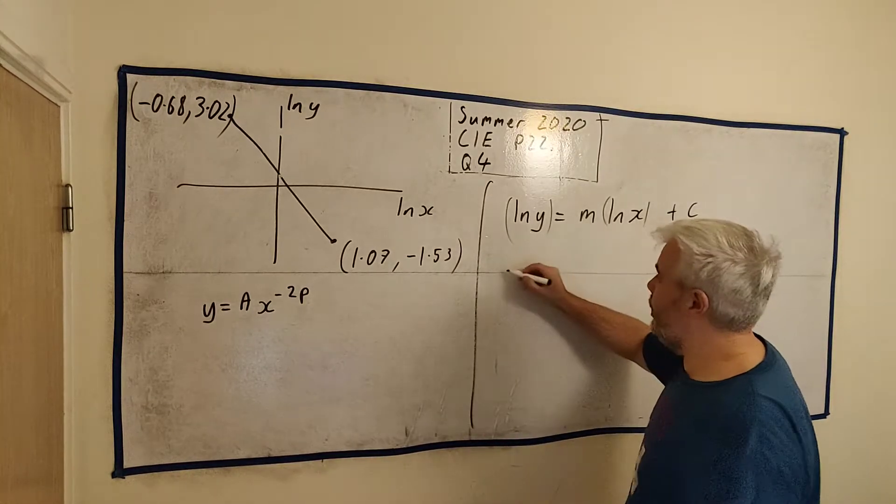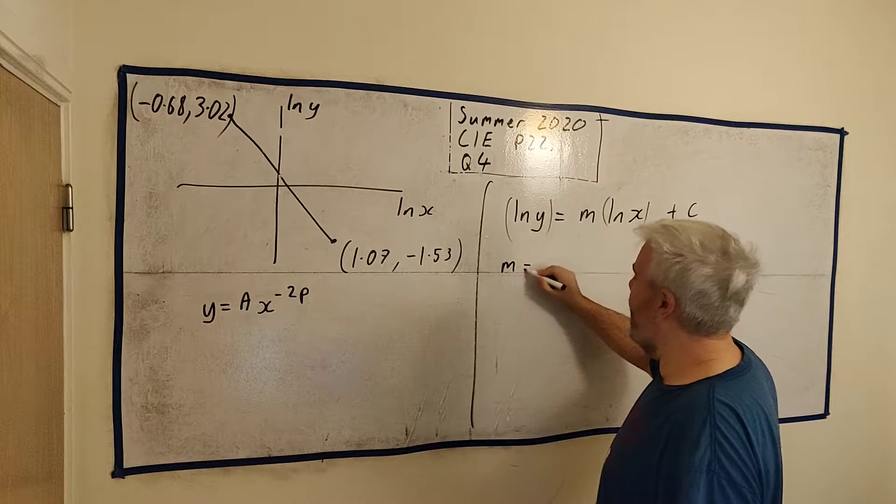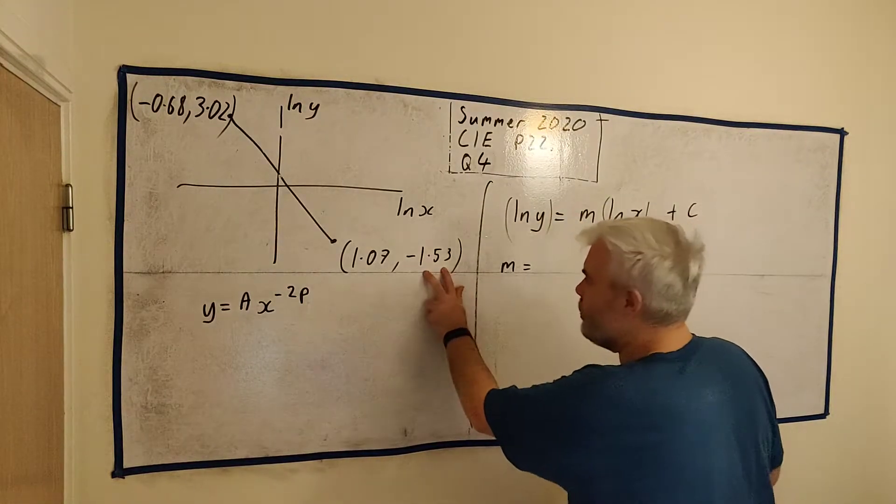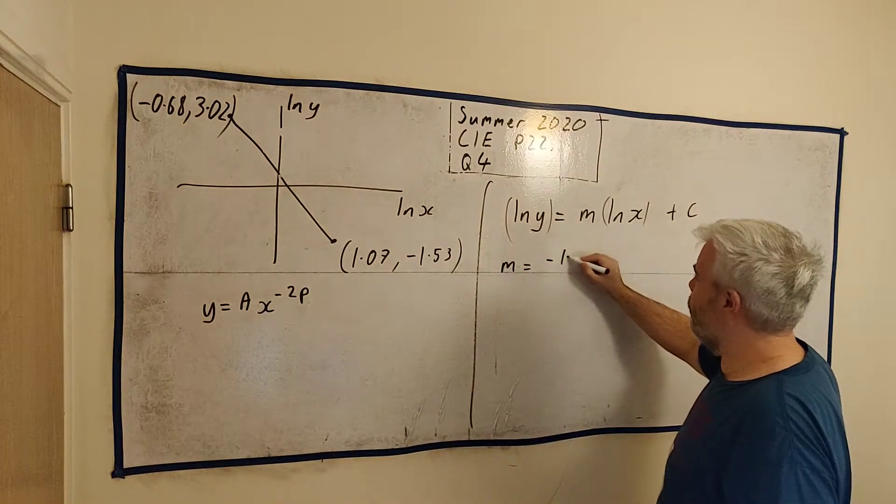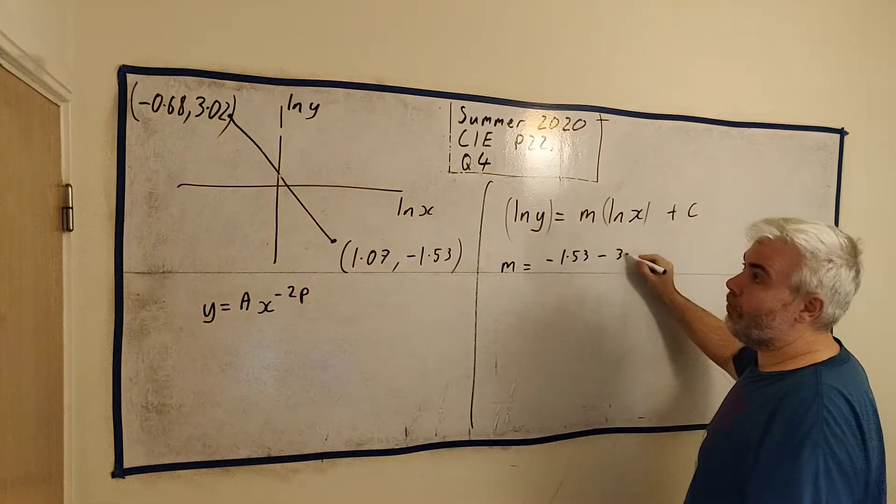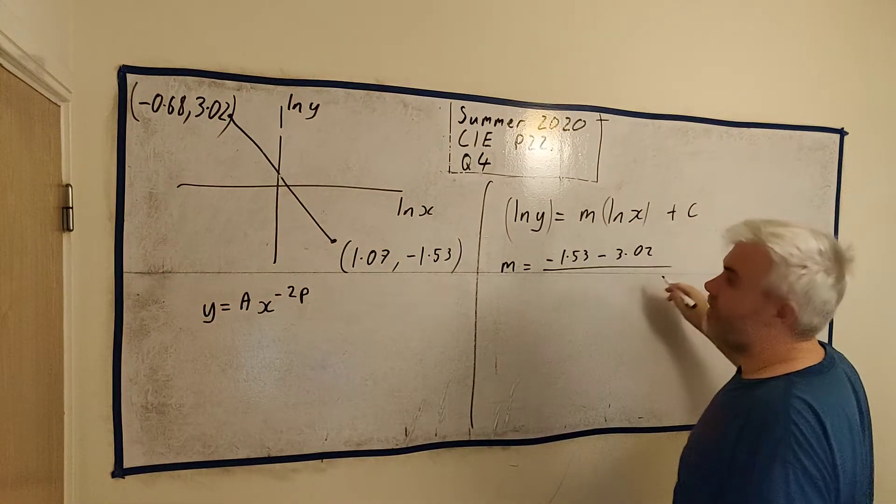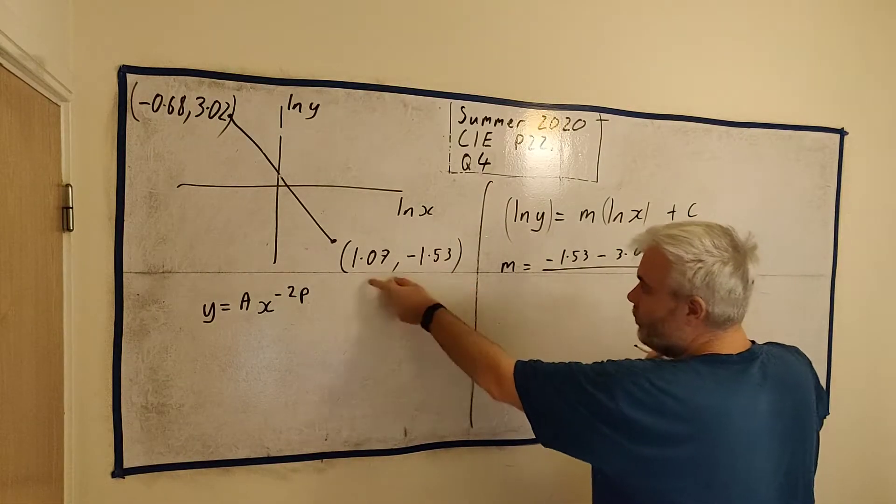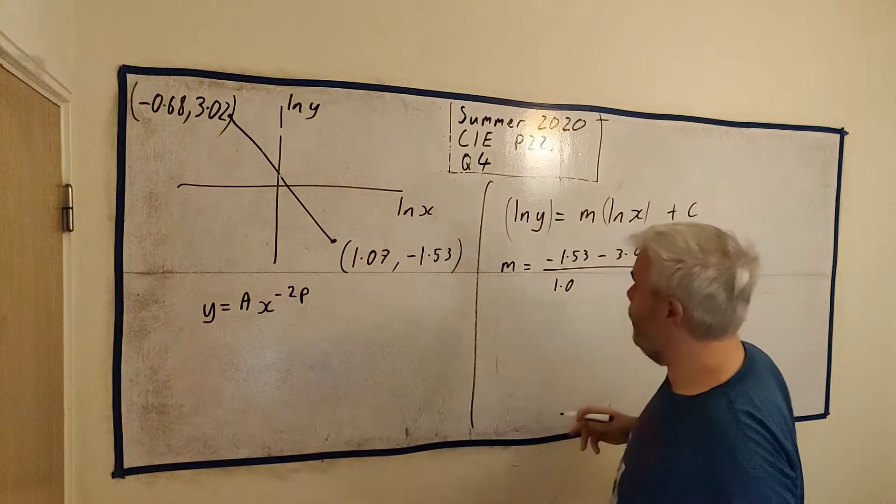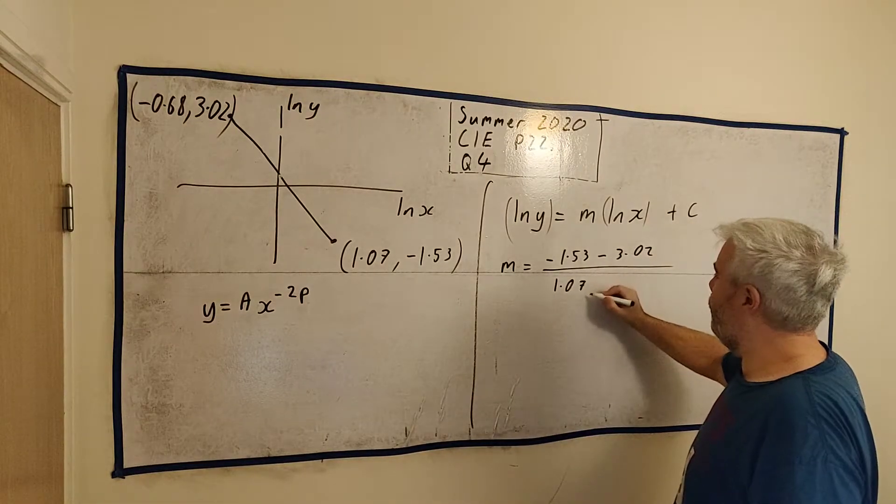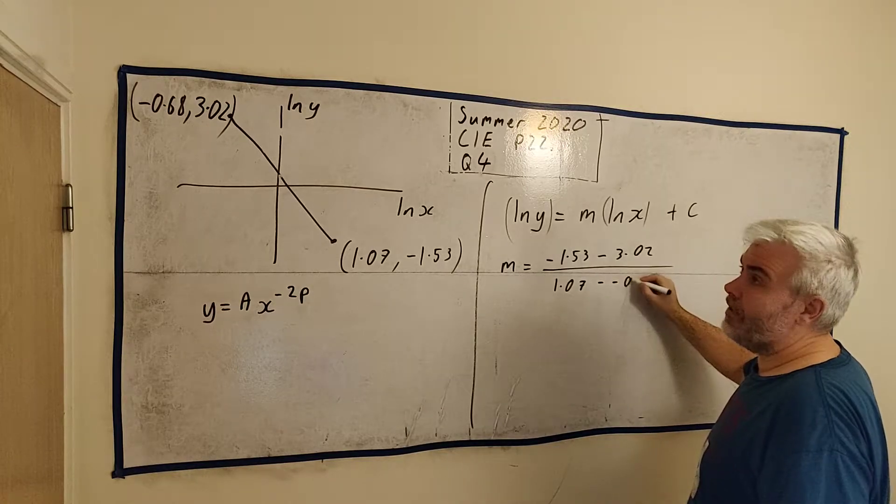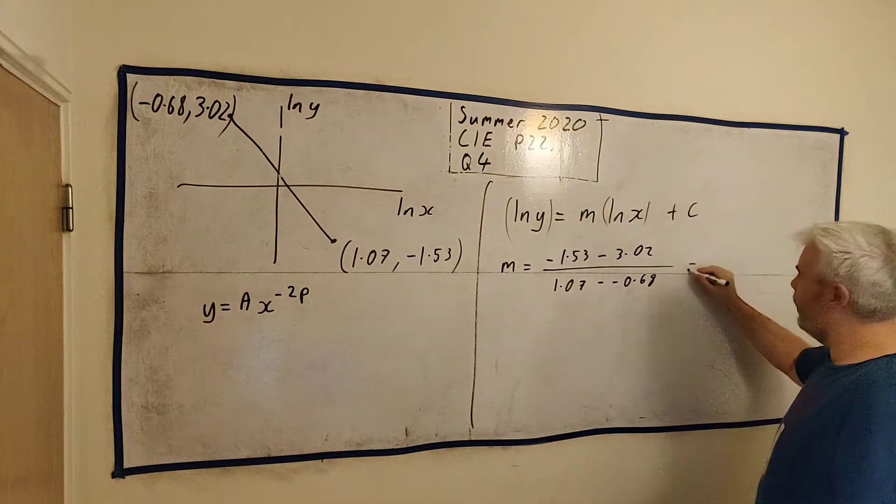So let's try and do that now. First let's find this slope. So we have a formula for slope. m is equal to y2 minus y1. So let's take this as y2. So that's minus 1.53. Take away y1. 3.02. And that's all divided by x2. If this was y2, this will have to be x2. So we could do these with the other way around the points. Once they're both the other way around. 1.07 minus 0.68.